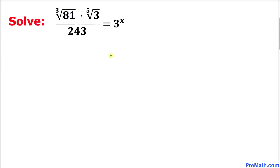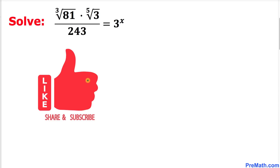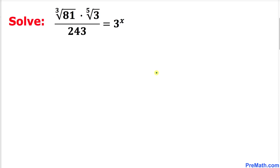Welcome to pre-math. In this video tutorial we are going to solve a rational equation that involves radicals as well. Here's our problem: cube root of 81 times fifth root of 3, divided by 243, equals 3 to the power x. Please don't forget to give a thumbs up to this video. Let's go ahead and get started with the solution.